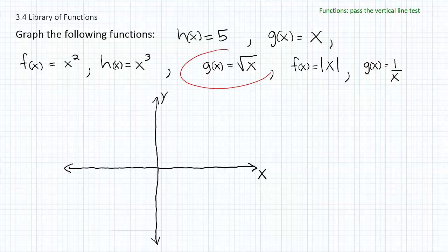Now let's look at g of x is equal to the square root of x. This graph actually looks like half of a parabola on its side — anchored at the origin, then opening up that way. All graphs that have a square root of x as the main component will look something like this: half of a parabola on its side. You can move it around, reflect it across the x-axis or y-axis, but basically it'll look like this if its main component is the square root of x.